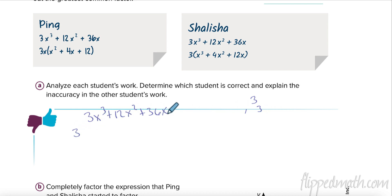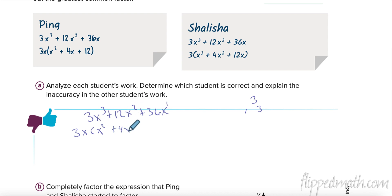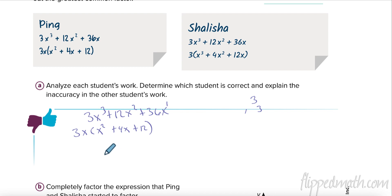I also have an x I can take out. So when I divide: 3 divided by 3 is 1; I had 3 x's, took 1 away, 2 left. 12 divided by 3 is 4; I had 2 x's, took 1 away, 1 left. 36 divided by 3 is 12; I had 1 x, took it away.